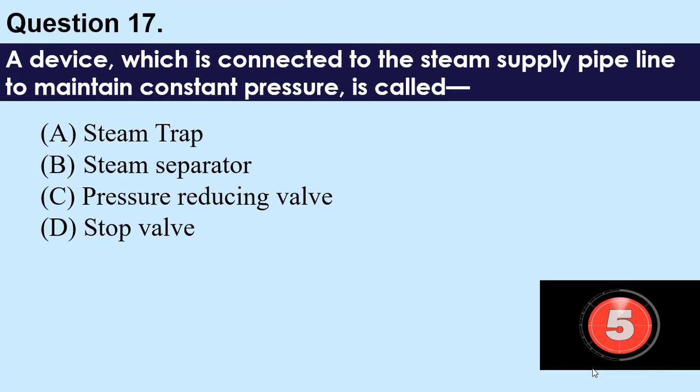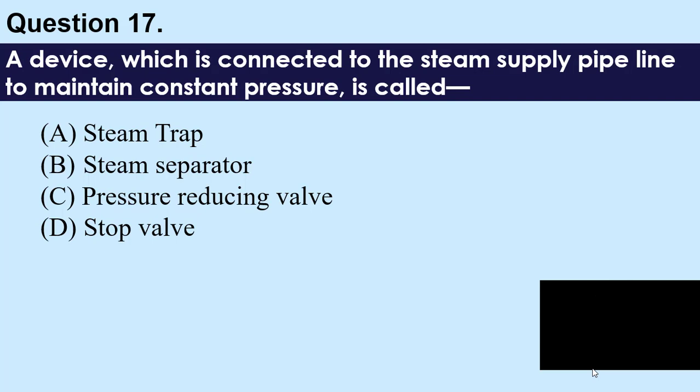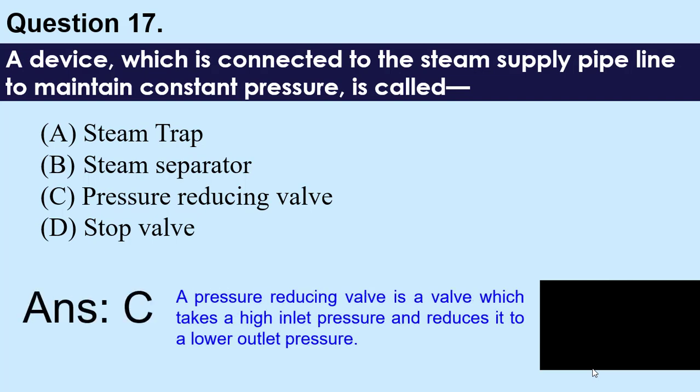Question number 17: A device which is connected to the steam supply pipeline to maintain constant pressure is called — A) steam trap, B) steam separator, C) pressure reducing valve, D) stop valve. The answer is C — pressure reducing valve. A pressure reducing valve takes a high inlet pressure and reduces it to a lower outlet pressure.